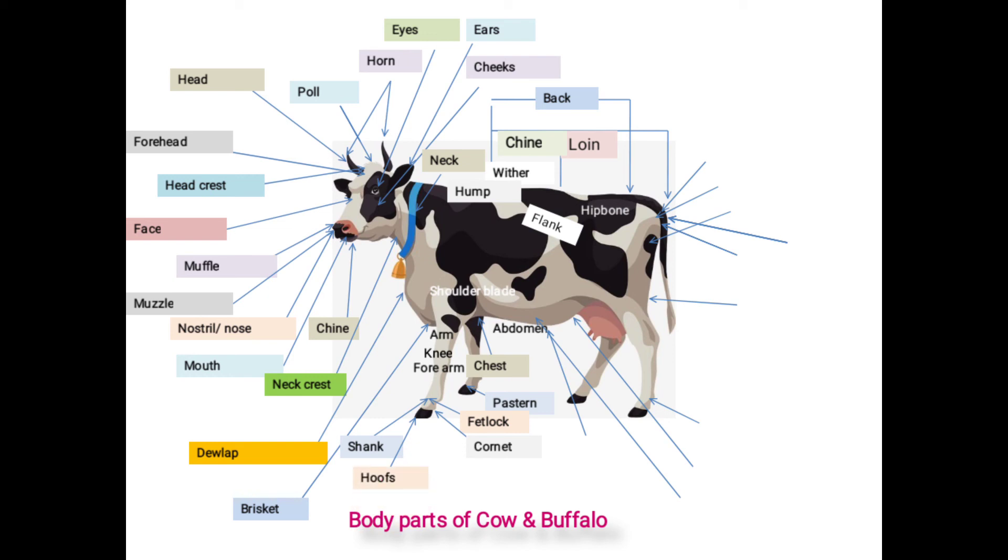And last one is coronet and hoof. The portion covered with hair just above the hoof called as coronet, and lowermost hard portion of the legs is called as hoof. There are two digits of the hoof, and the gap between digits is termed as interdigital space. Hard back portion is heel, front portion is toe, and lower flat portion is called as sole. Last one is dewclaws: the hard finger-like projection on back side of the pastern are called as dewclaws.